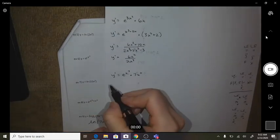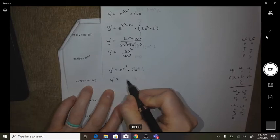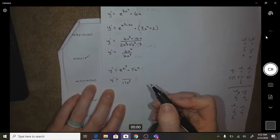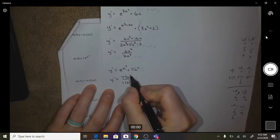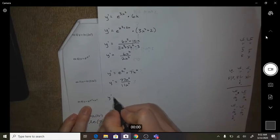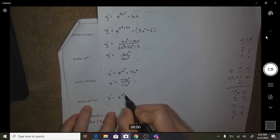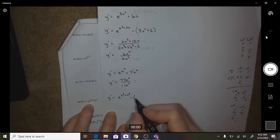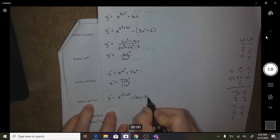Number seven, 11x to the 7th goes on the bottom, and then 77x to the 6th. Number eight, repeat what you see, and now times the derivative of u, so that would be 2x plus 3x squared.